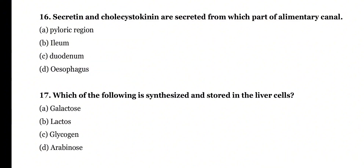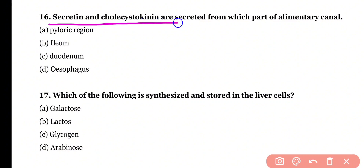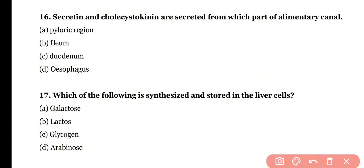Question 16. Secretin and cholecystokinin are secreted from which part of the alimentary canal? Pyloric region, ileum, duodenum, or esophagus? Correct answer is option C. Secretin as well as cholecystokinin are released from the duodenum of the small intestine.